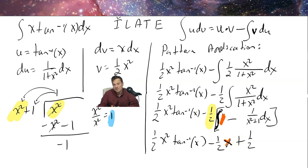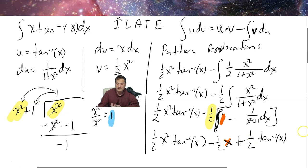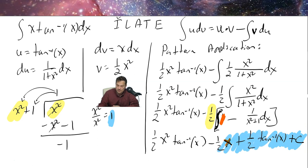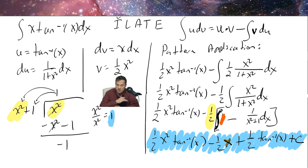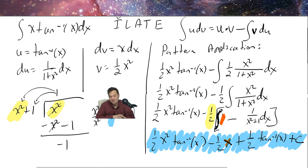...and then minus one-half times negative gives plus one-half times tan inverse of x, plus the constant C. So our final antiderivative is: one-half x squared tan inverse of x minus one-half x plus one-half tan inverse of x plus C. That's all of our work from top to bottom — thank you so much for watching, please leave a like and subscribe, and I'll see you in another video.